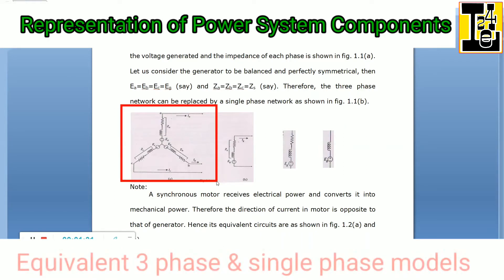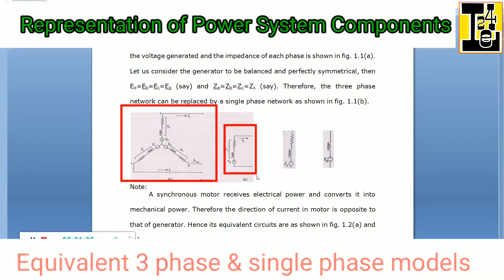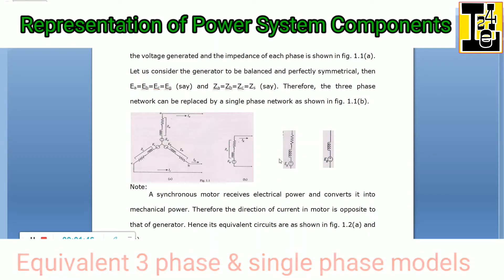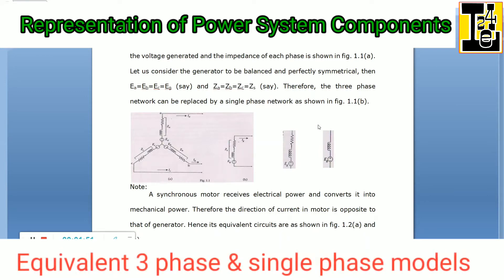Therefore, the three-phase network can be replaced by a single phase network as shown in this diagram. If the system is balanced and symmetrical, we can replace it by a single phase equivalent network. A resistor, reactor, and EMF source are connected in series. This will be called an impedance diagram. If we omit the resistor, this will be called the reactance diagram.